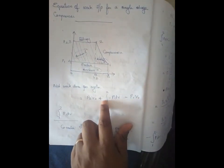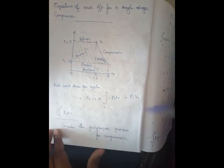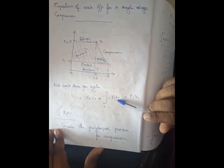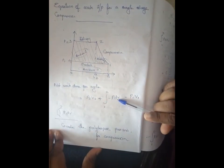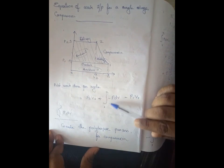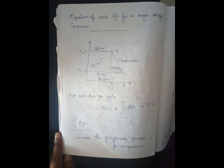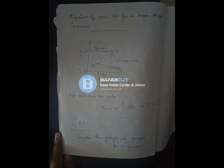The complete work input equals P2V2 plus the polytropic compression curve integral PDV minus P1V1. This gives the final expression for work input to the single stage reciprocating compressor.